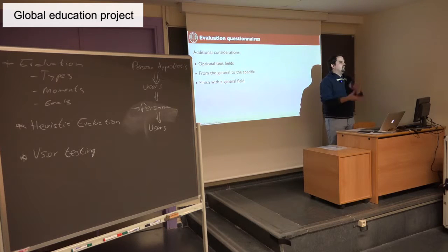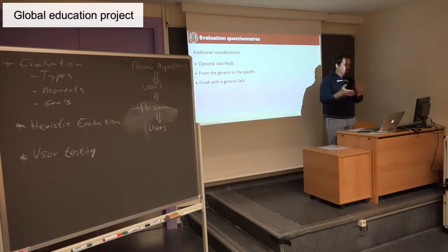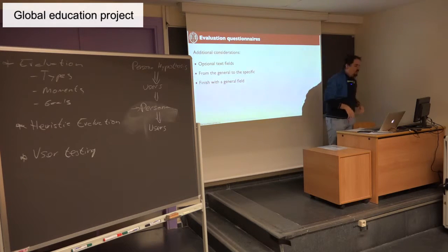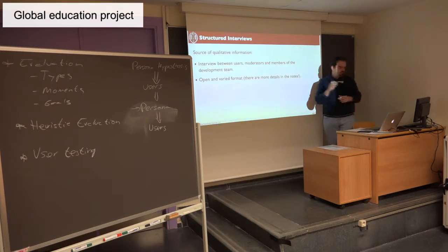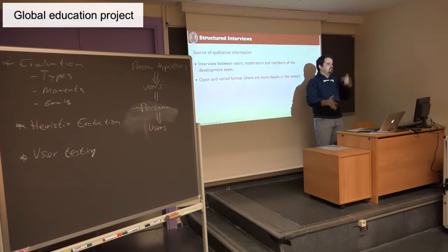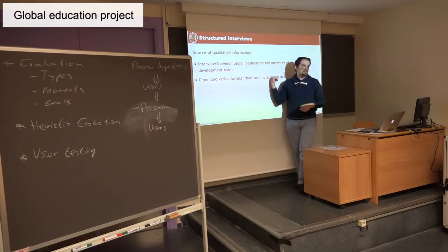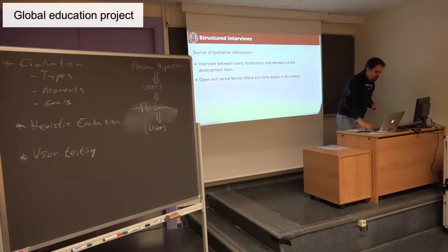These were all common-sense type recommendations. Do leave optional text fields — there's a lot you can learn from there. Go from the very general to the very specific so that users don't get looping on one small issue they just detected. Try to go from open-ended to smaller, and always finish with 'tell me whatever you want' on a final, very open field. If you want qualitative information — not numbers — then you may want to go with structured interviews. There is much more on the class notes in the PDF file.